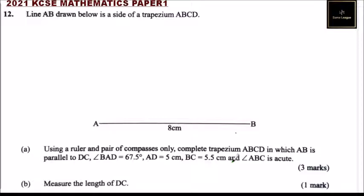BC is equals to 5.5 cm and angle ABC is an acute angle. So by drawing that you get 3 marks.